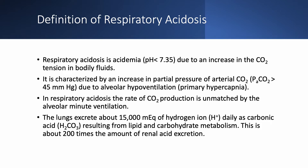The cause is alveolar hypoventilation, which creates primary hypercapnia. In respiratory acidosis, the rate of CO2 production is unmatched by the ability of the lungs to excrete it via alveolar minute ventilation. The lungs excrete about 15,000 milliequivalents of hydrogen ions daily as carbonic acid (H2CO3), resulting from lipids and carbohydrates metabolism — about 200 times the amount of renal acid excretion.